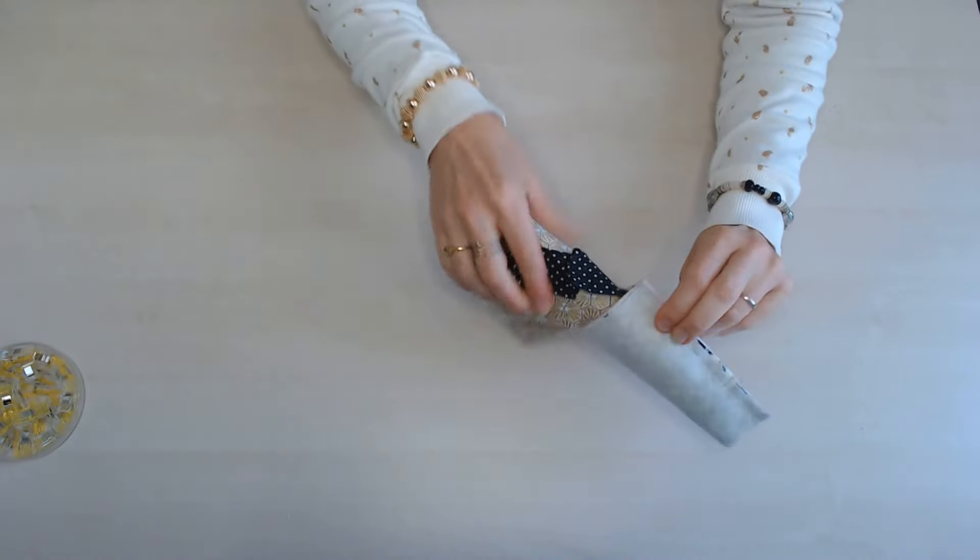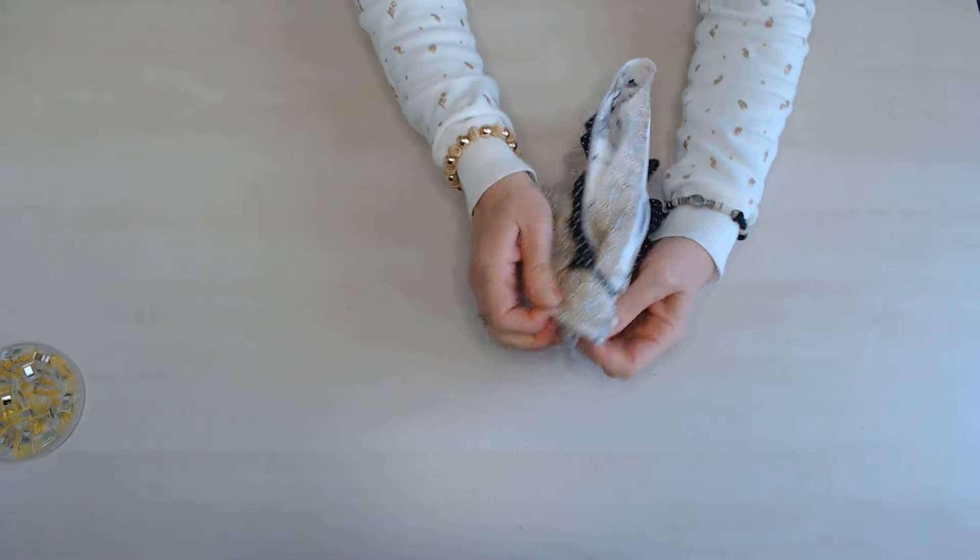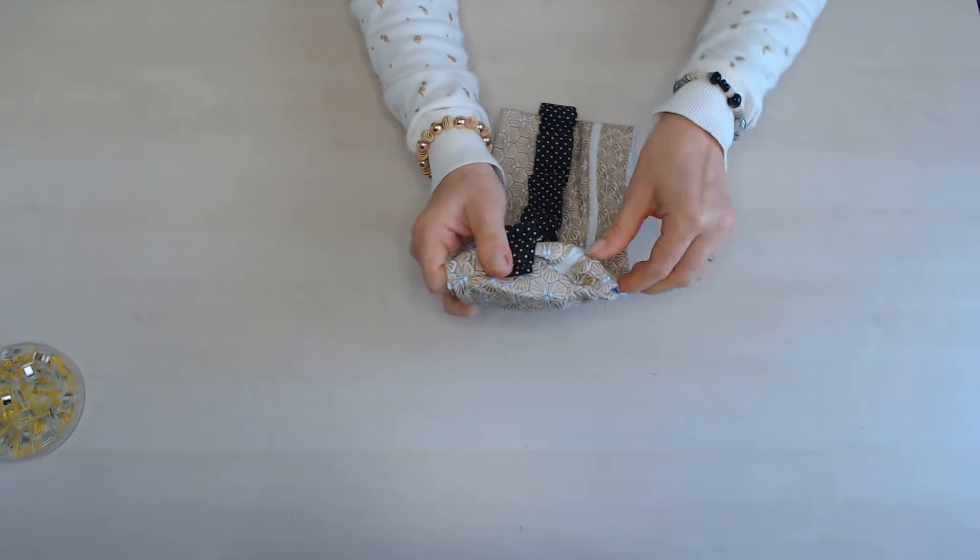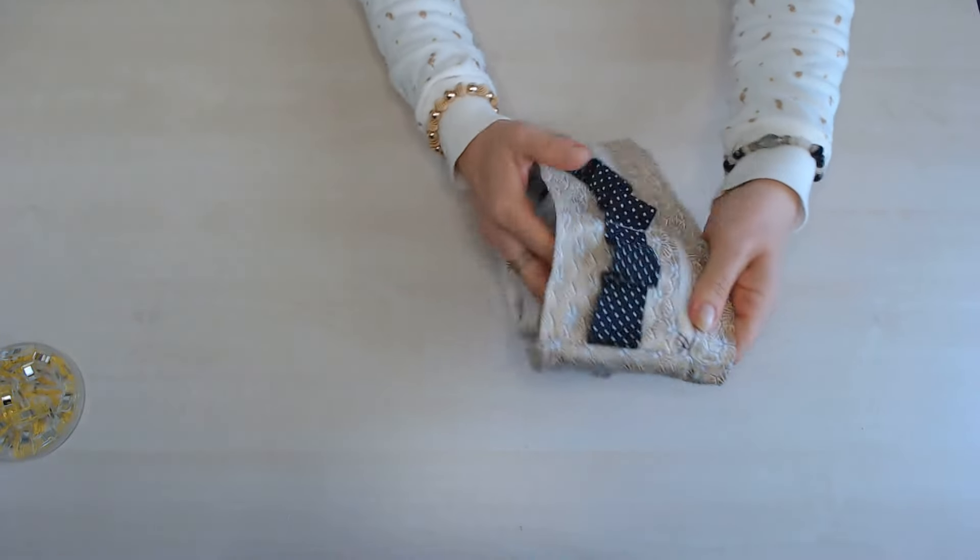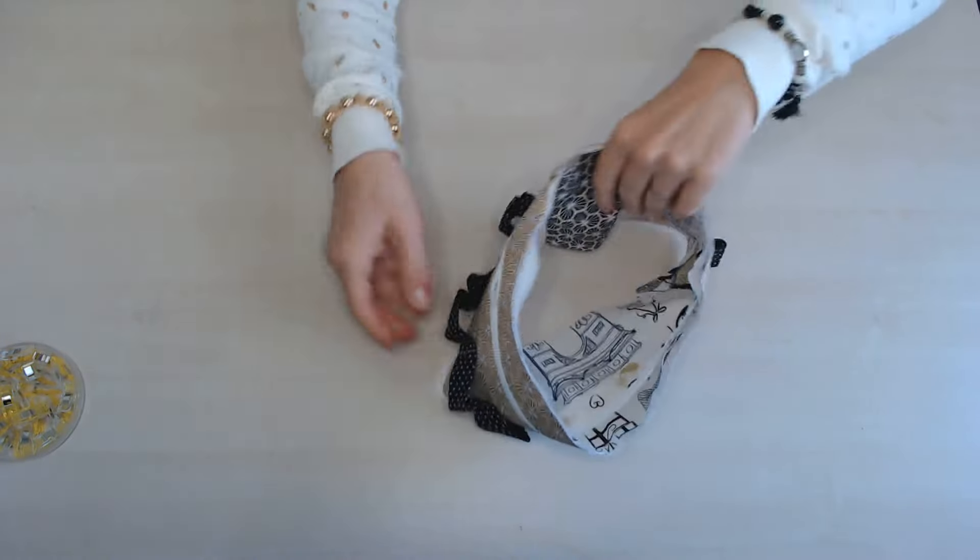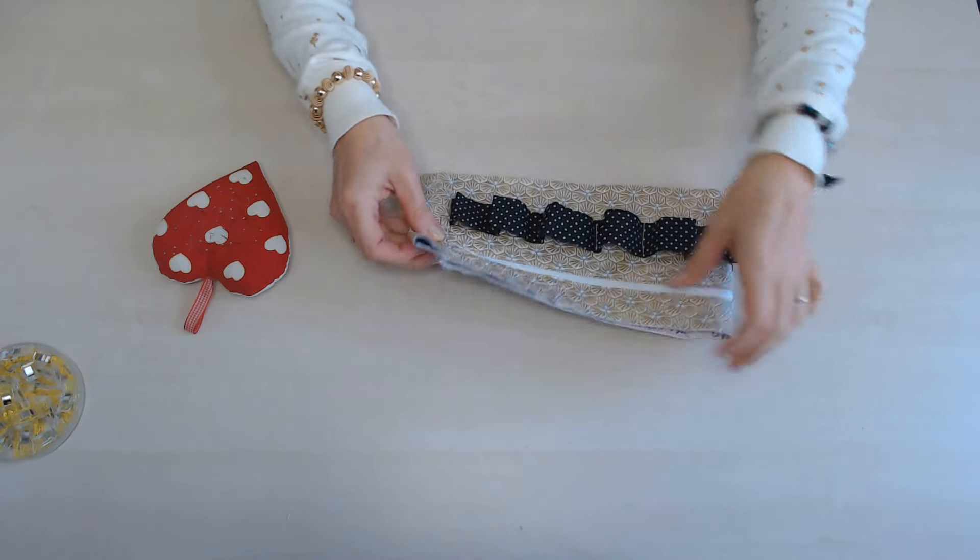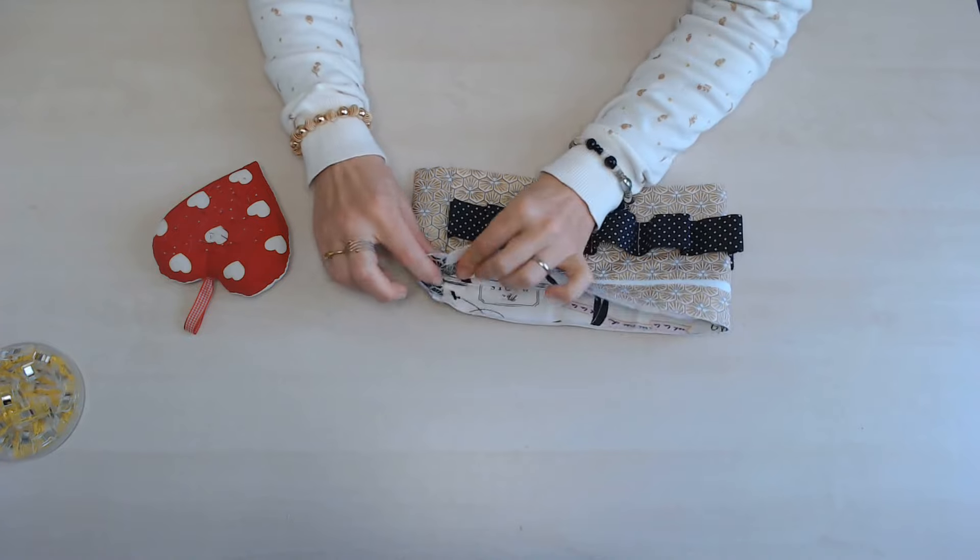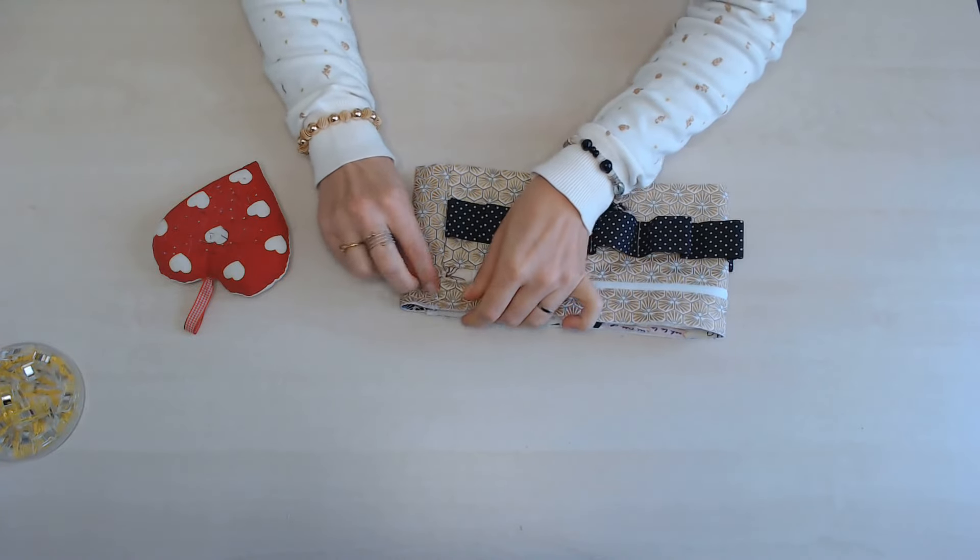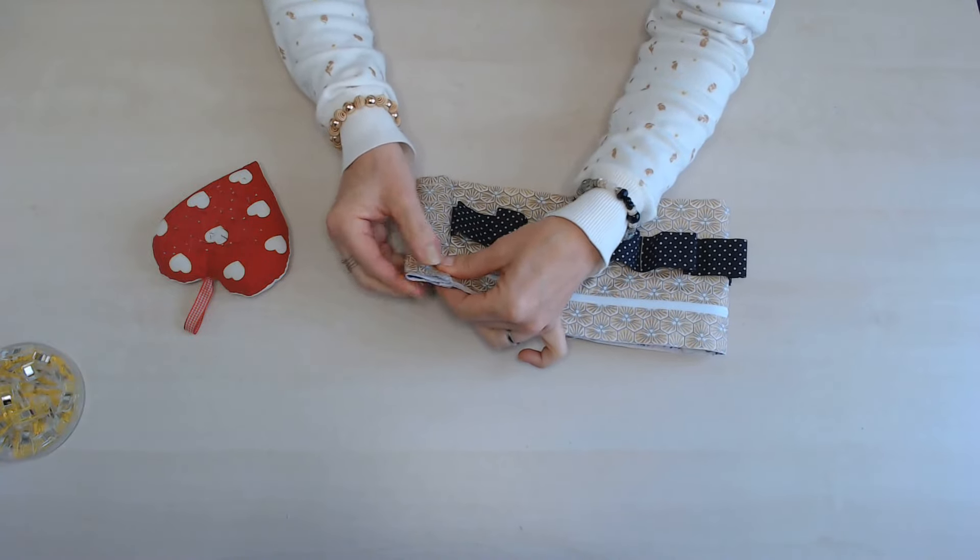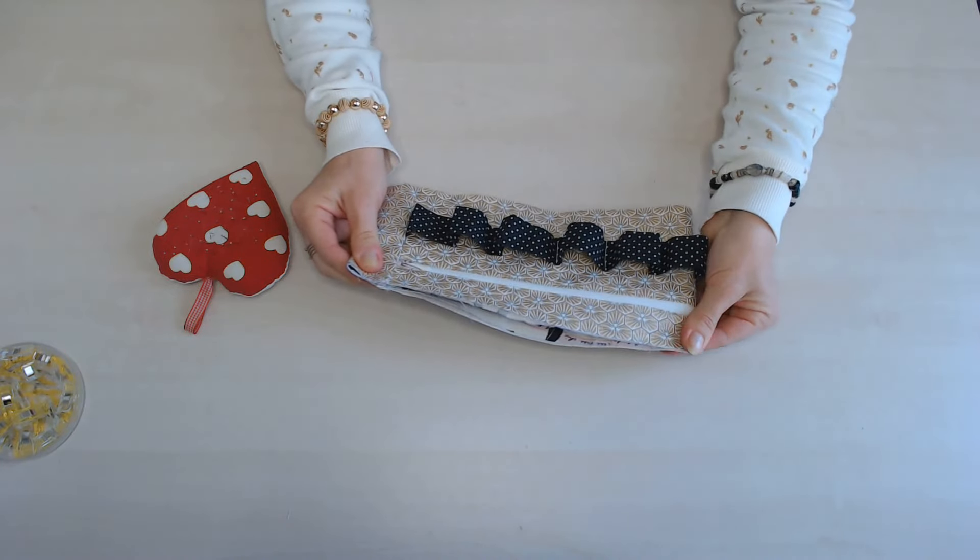On va piquer sur la hauteur. Une fois piqué, on retourne. Je place le corps du Vanity à plat, je fais correspondre les coutures d'assemblage du dos, comme ceci. Et je prends un repère ici et ici.